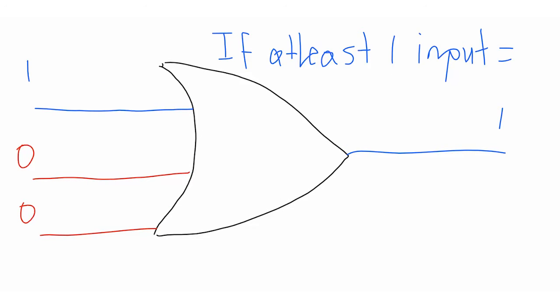The next logic gate is the OR gate. This one is also very simple. If any of the inputs are 1, then it will return 1.